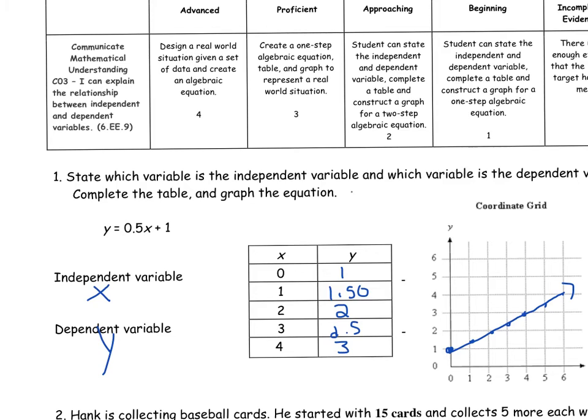So as we've talked about many times already, the independent variable is always the x. It's always the first column and the horizontal axis. The dependent variable is always the y, the second column, and your vertical axis. I suggest you highlight your notes so you remember this. So we have our dependent variable and our independent variable.